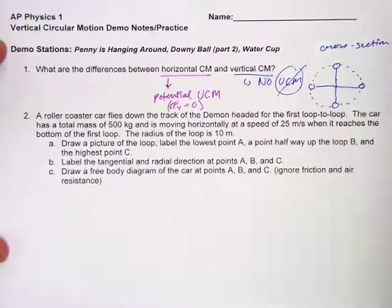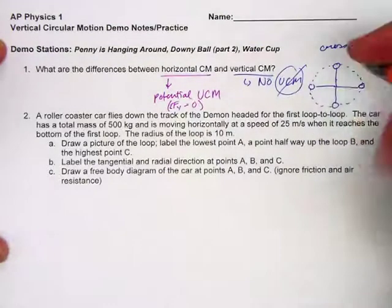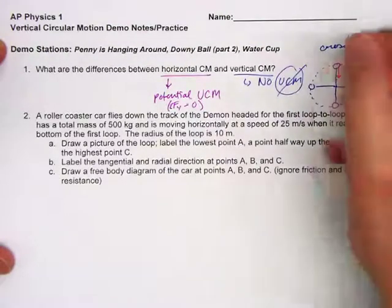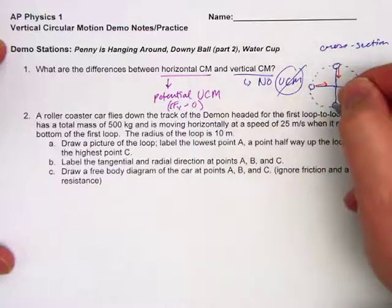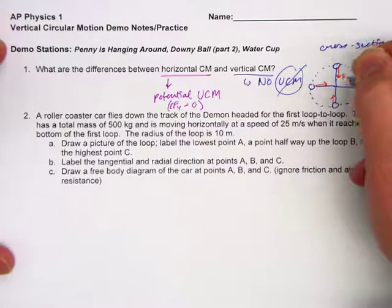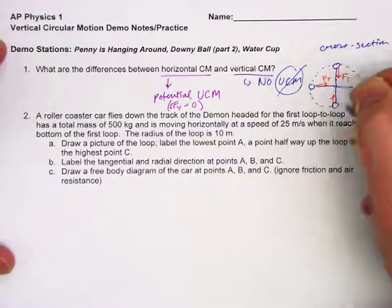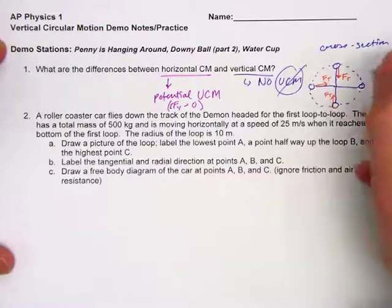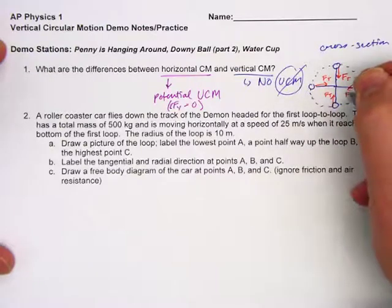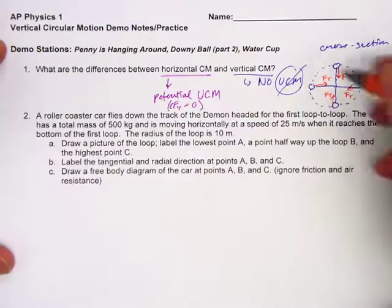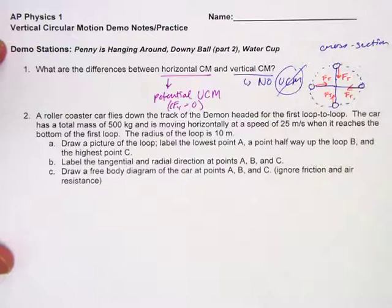Notice that the tension, in this case, will always be centripetal. This will be Ft, always pulling towards the center of the circle. Always providing a centripetal force to the ball as it goes through this vertical circle.